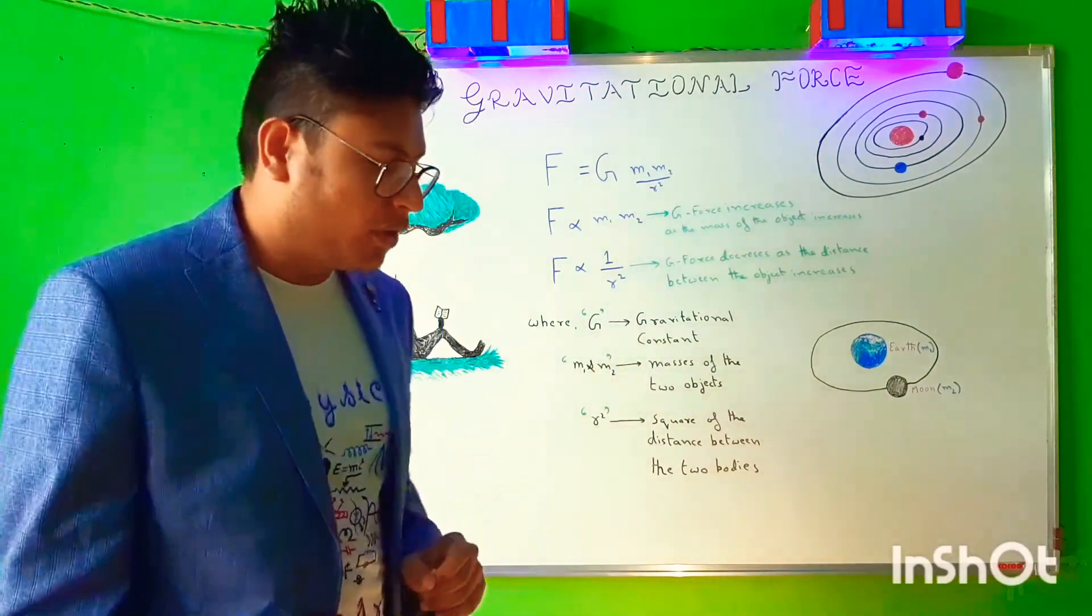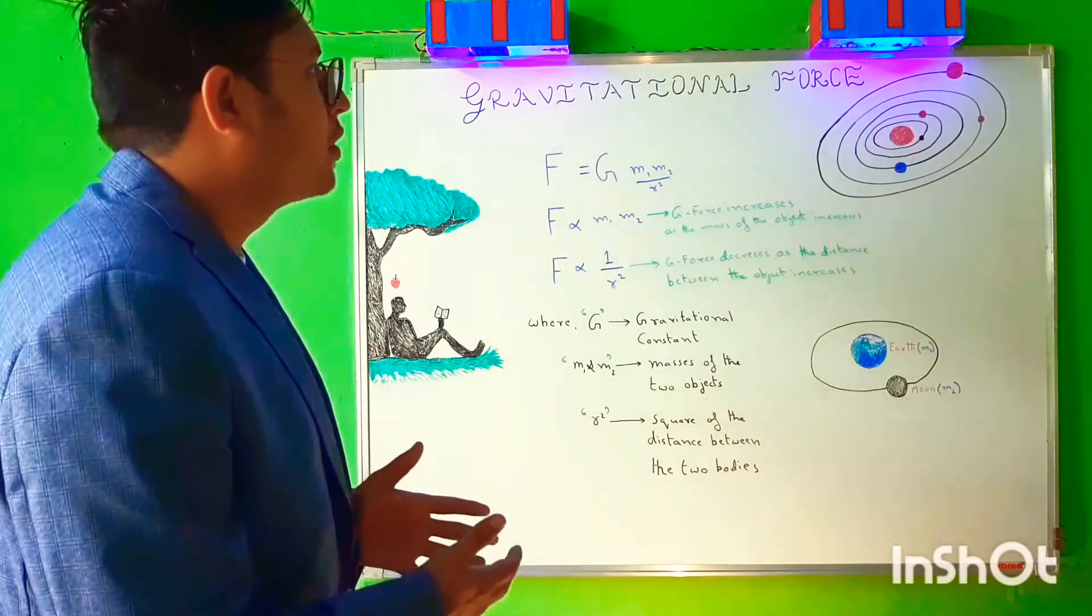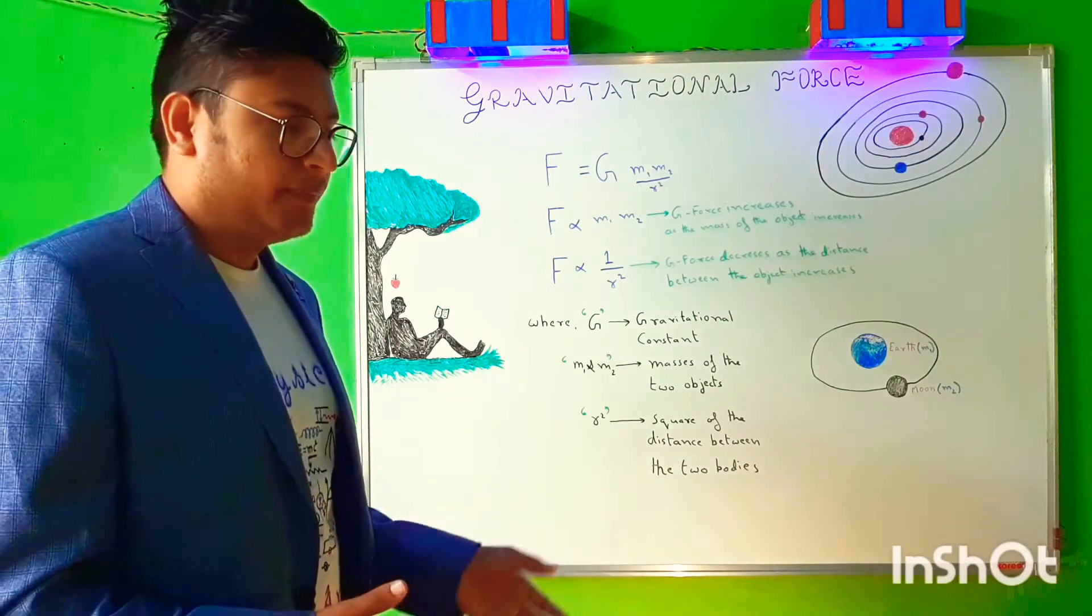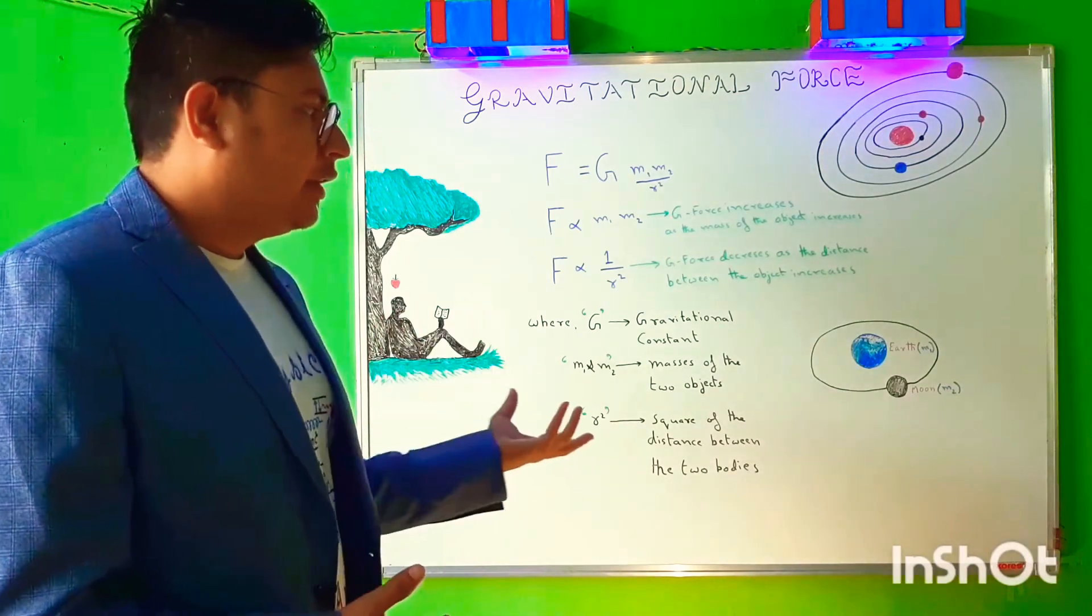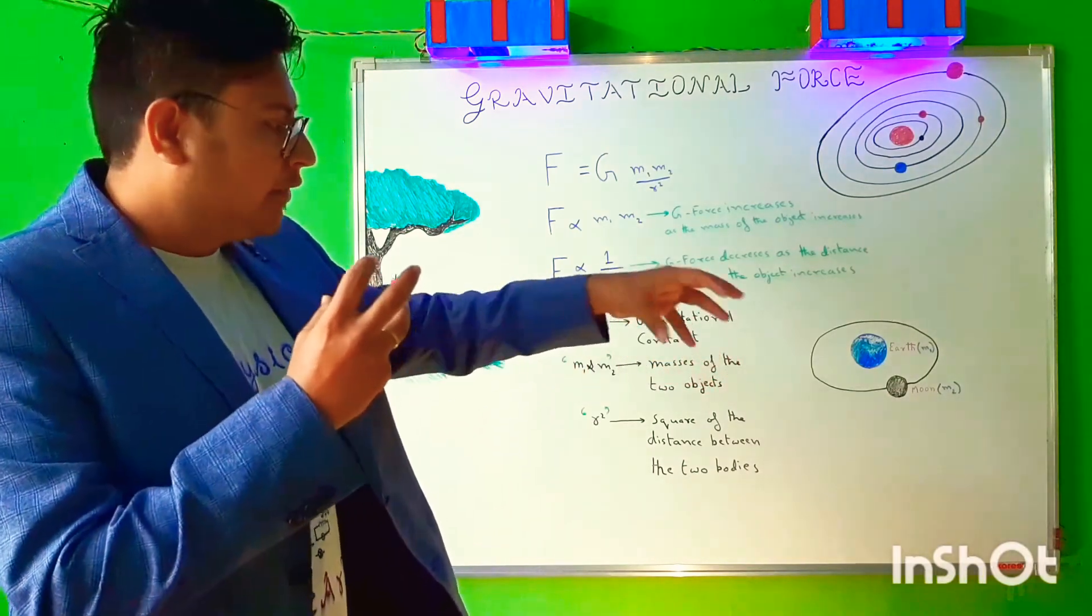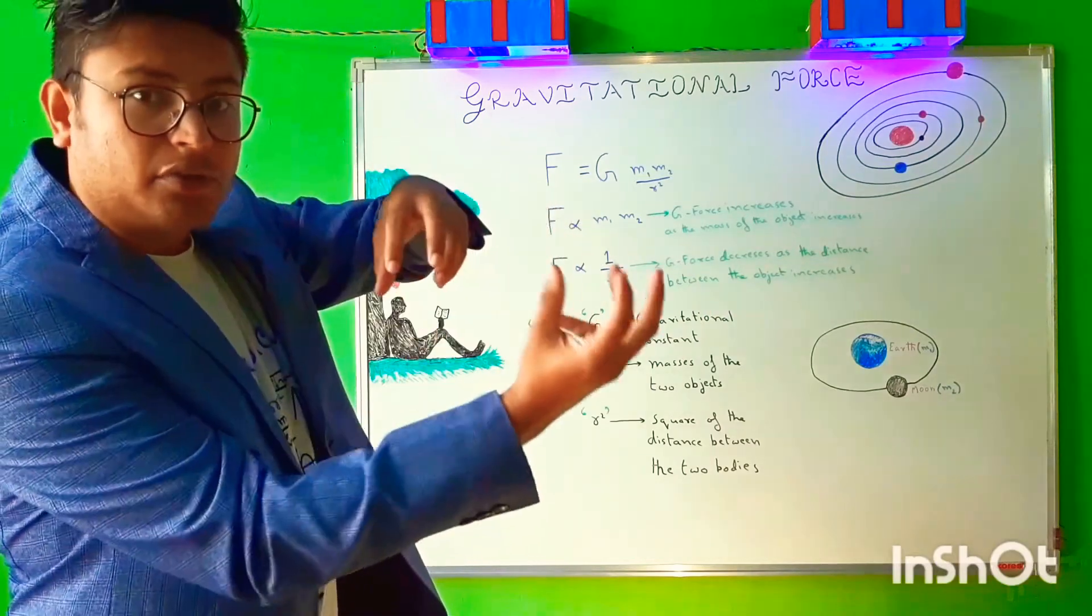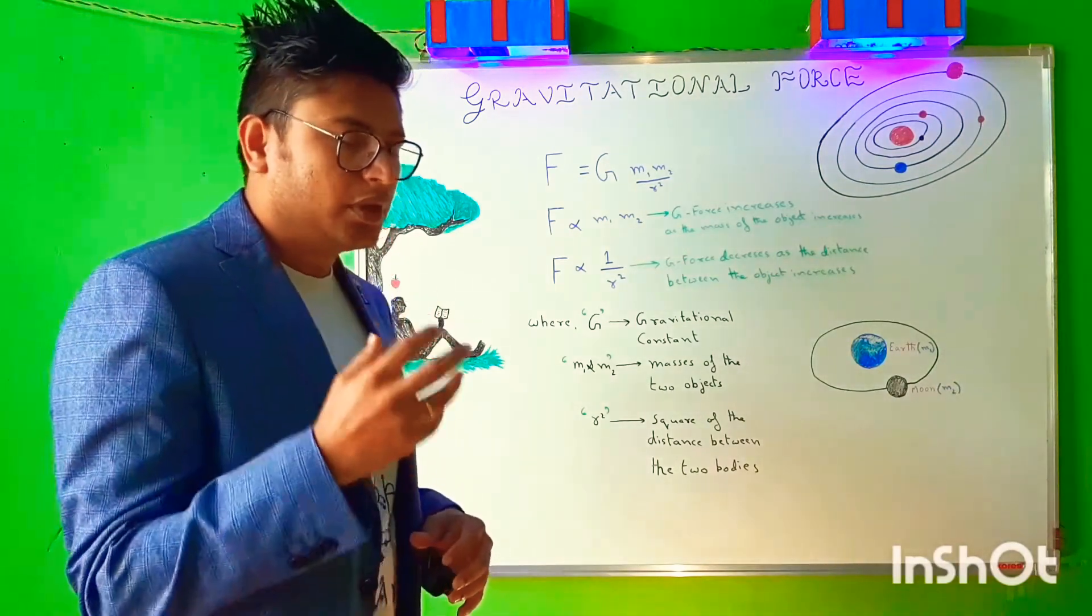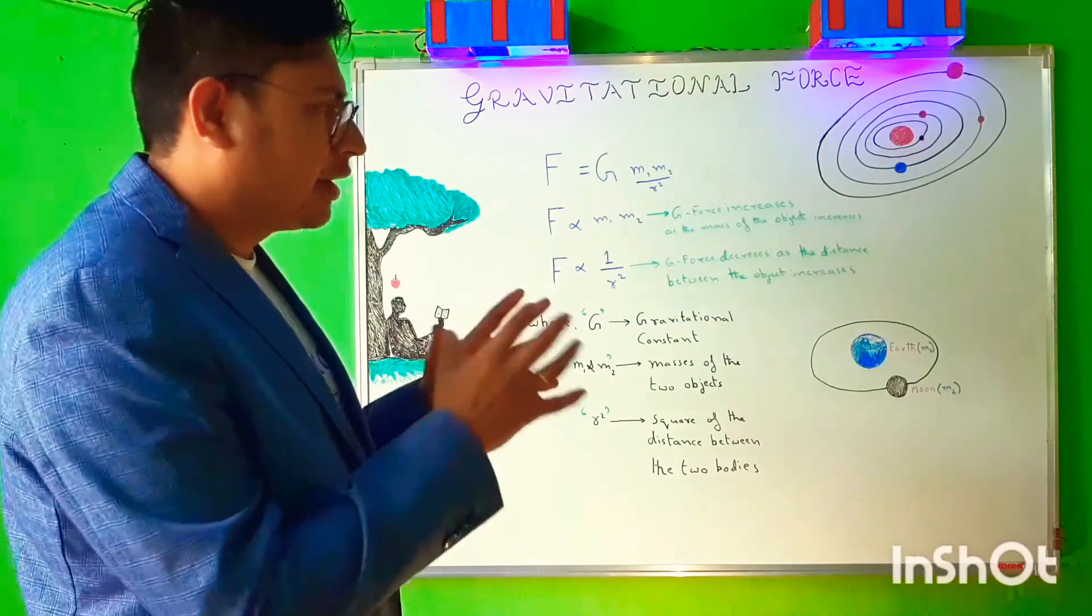This is also coming from the inverse square law. So this is what Newton came out with regarding the explanation of the force called gravitational force or the force of gravity, where everything that goes up comes down and every massive object revolves - every other object is attracted to a massive object and it revolves around it. The moon around the earth and the earth around the sun and the rest of the solar system.